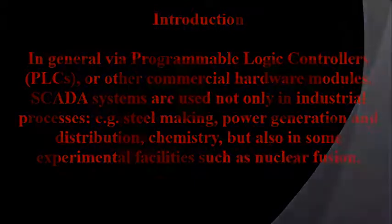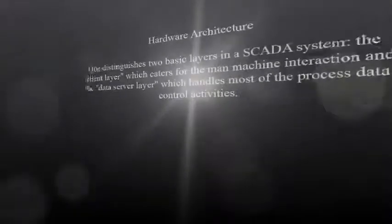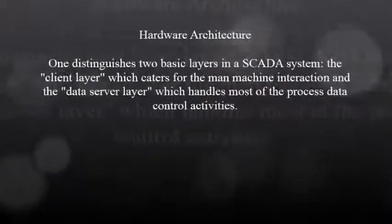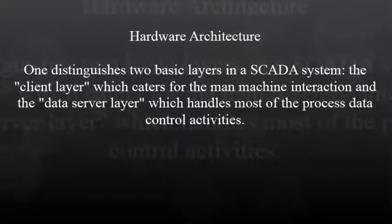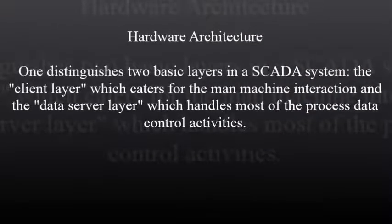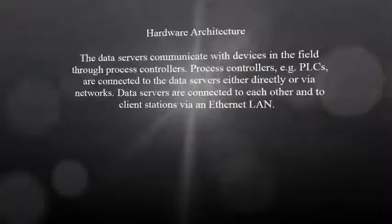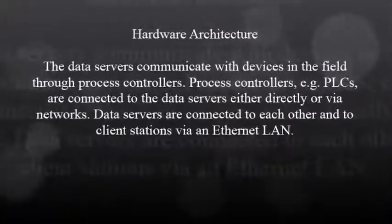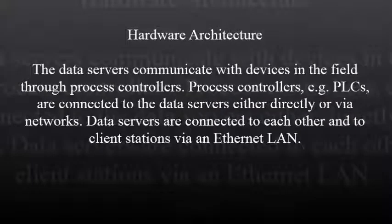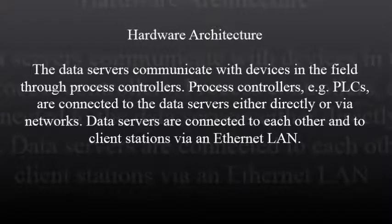Hardware Architecture. One distinguishes two basic layers in a SCADA system: the client layer, which caters for the man-machine interaction, and the data server layer, which handles most of the process data control activities. The data servers communicate with devices in the field through process controllers — for example PLCs — connected to the data servers either directly or via networks. Data servers are connected to each other and to client stations via an Ethernet LAN.